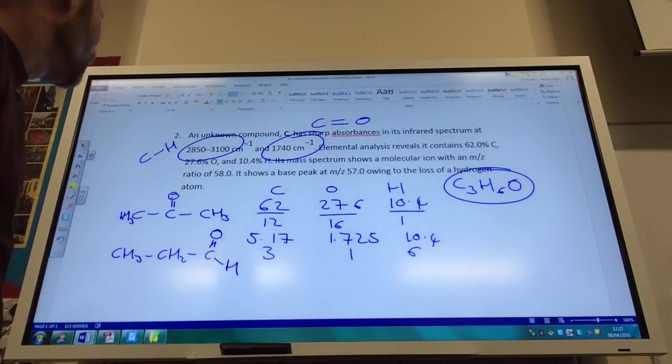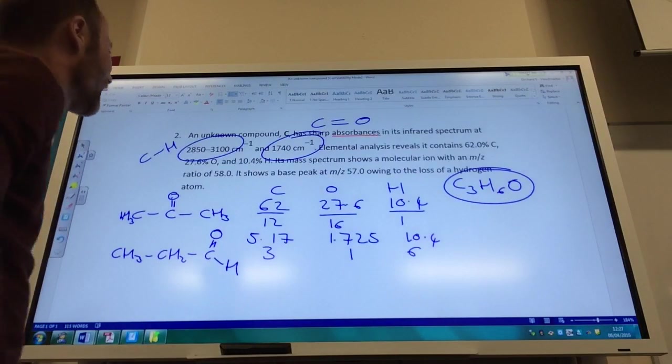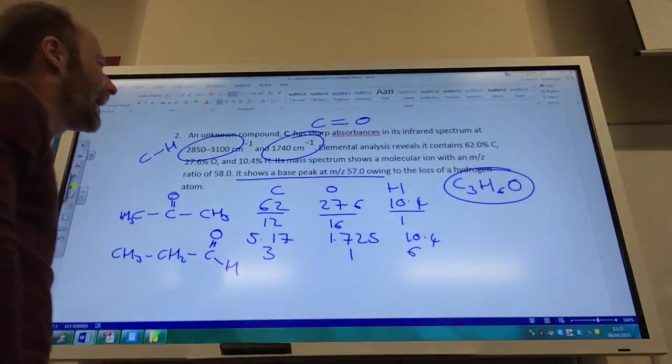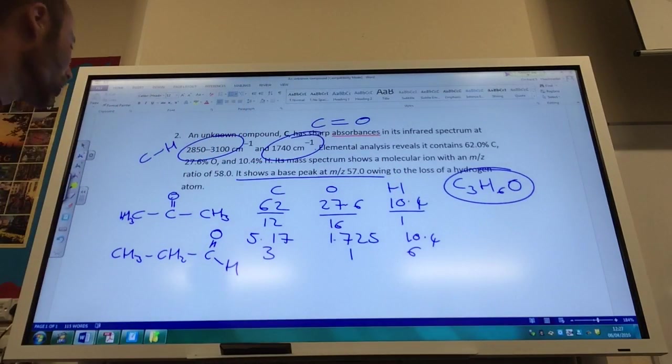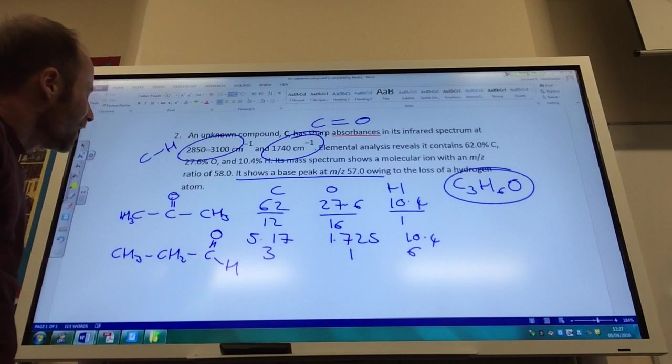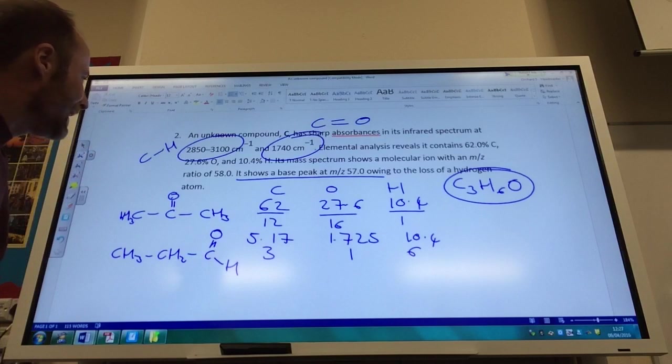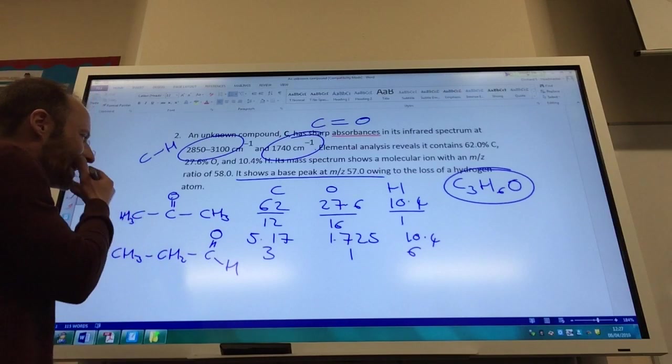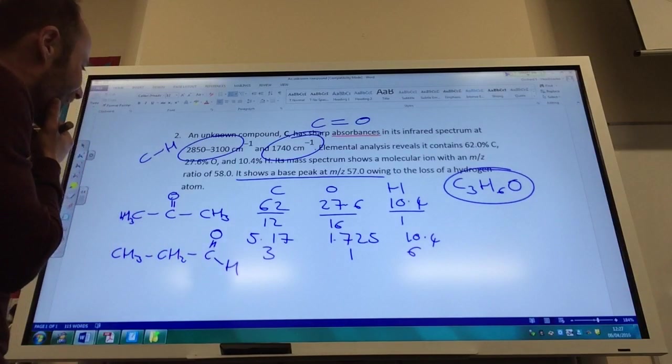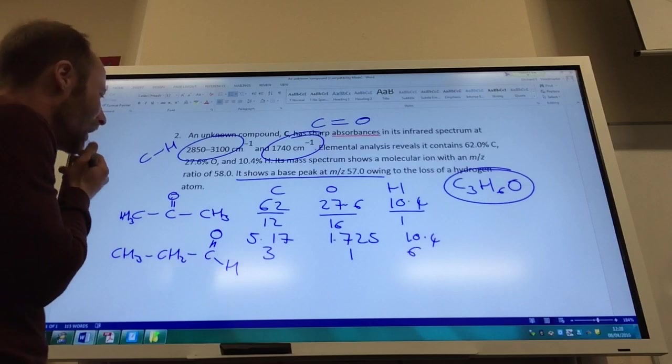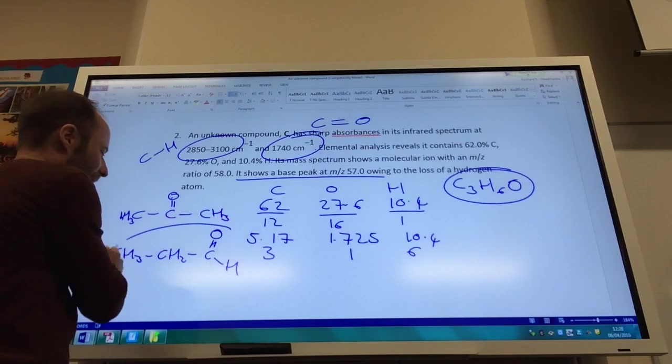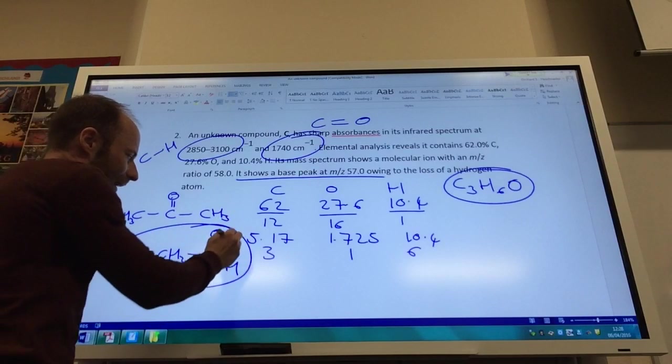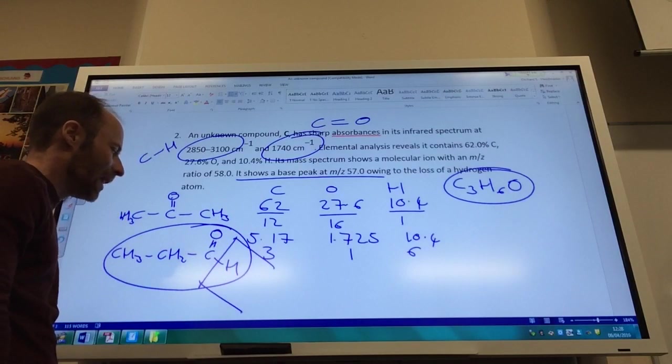So that's what I've got. But if you have a look, it's given me this information. It's got a base peak at m/z of 57, showing the loss of a hydrogen atom. So does that make sense? Does that give me any clues as to which one it is? Well, I think based on that, it's going to be propanal, and that is due to a loss of that hydrogen atom there which is popped on.